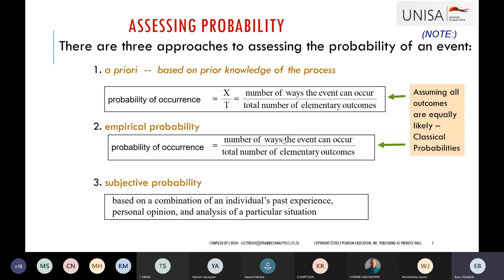We also have subjective probability, where as a researcher you base the probability on your experience, past experiences, or personal opinion. That is subjective to you — another researcher might use their own different experience. With a priori, everybody experiences it the same way, like the sun coming out. That's how you differentiate between a priori and subjective probability.